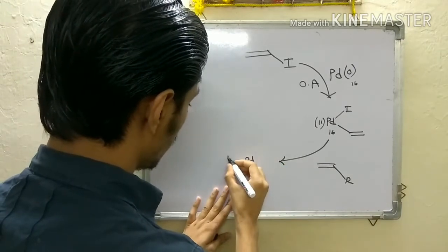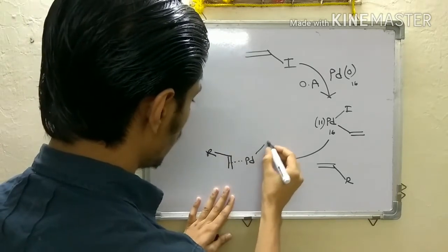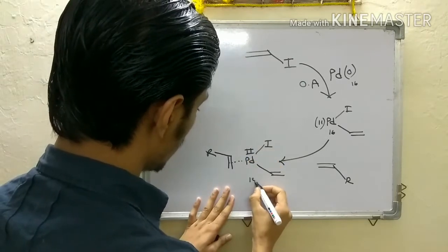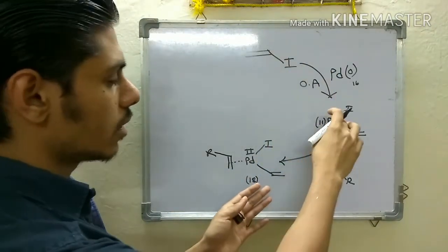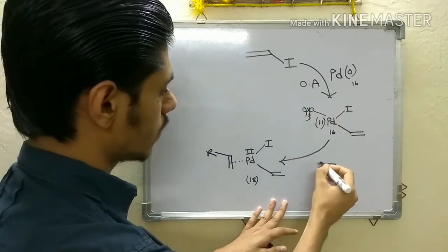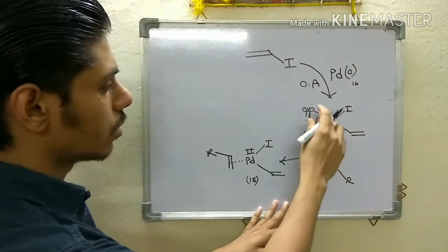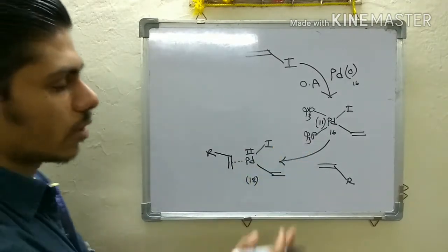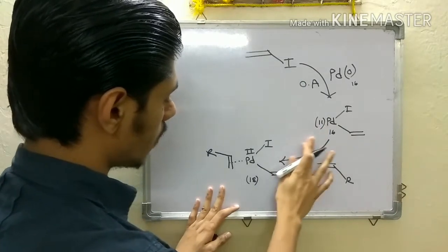A bond is formed between the alkene and the palladium. The palladium is now in the +2 oxidation state and it is an 18-electron complex. Actually, two more ligands will be present — these may be triphenylphosphine ligands. If you count the electrons with those ligands, it will be 16 electrons for the oxidative addition complex and 18 electrons after alkene coordination. For clarity I am omitting those ligands, but you should know it goes from 16-electron to 18-electron.